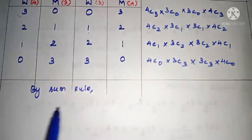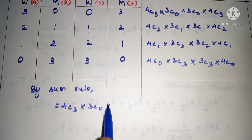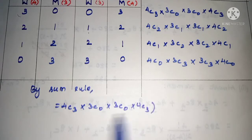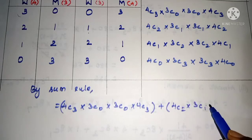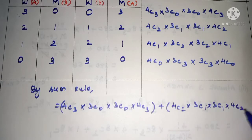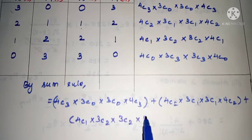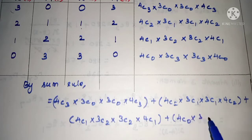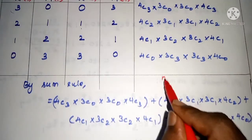Adding all cases, the total is: 4C3 × 3C0 × 3C0 × 4C3, plus 4C2 × 3C1 × 3C1 × 4C2, plus 4C1 × 3C2 × 3C2 × 4C1, plus 4C0 × 3C3 × 3C3 × 4C0.